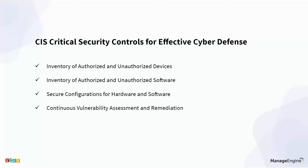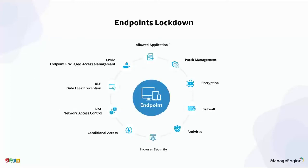The fourth CIS control is continuous vulnerability assessment and remediation — a very important factor. The fifth is controlled use of administrative privilege, meaning you should never provide unnecessary administrative privileges to users or applications. With these five CIS principles, we can approach an endpoint lockdown — similar to a lockdown situation — using all these features. If we can lock machines down with these modules, we can reduce the attack surface at the endpoint level.